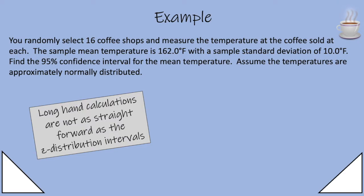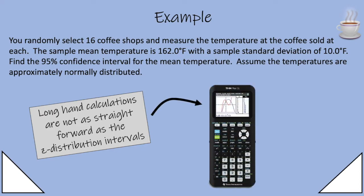So longhand calculations are not as straightforward as the z distribution intervals because of those pesky degrees of freedom that we learned about. So we are going to jump straight to the calculator.